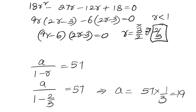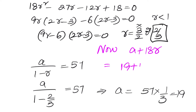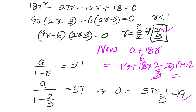Once we know A and R, we compute A plus 18R: 19 plus 18 times (2/3), which equals 19 plus 12, giving 31. So the value of A plus 18R equals 31. To summarize: we were given two GPs, eliminated A to get a quadratic in R, solved for R, went back to find A, and then computed A plus 18R.